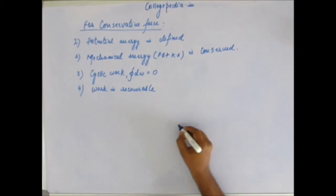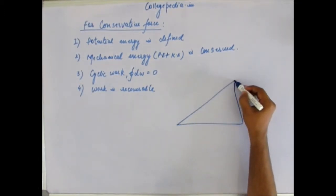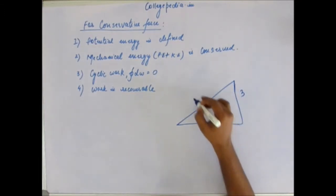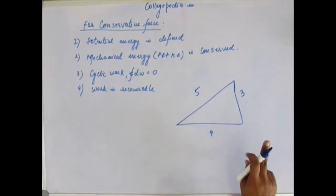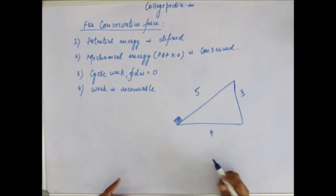Now we have an inclination like this: 3, 4, 5. These are the lengths. There is a block kept at the bottom of the inclination, and very slowly, so that the block doesn't gain any kinetic energy, we have to push this block to the top of the inclination. And the question says: what is the work done for that?